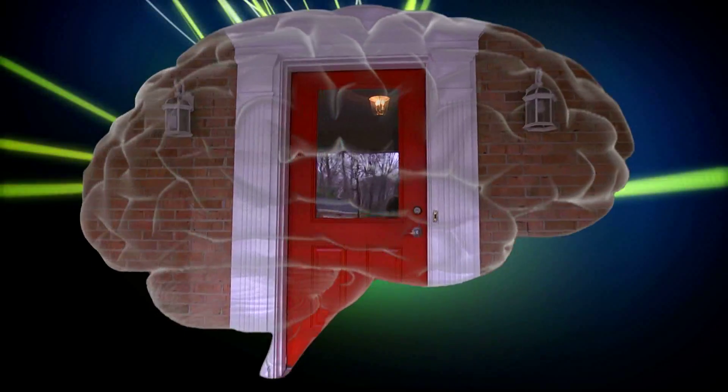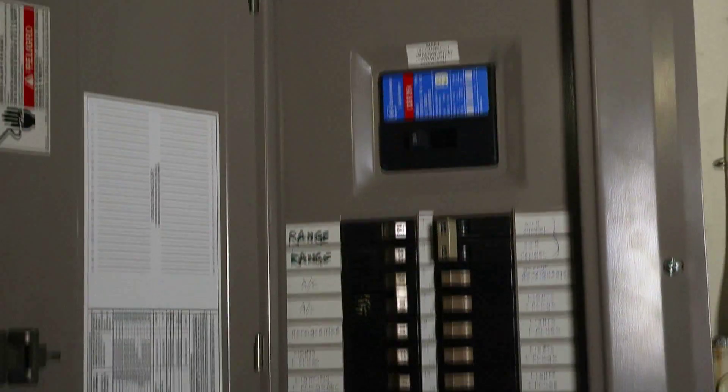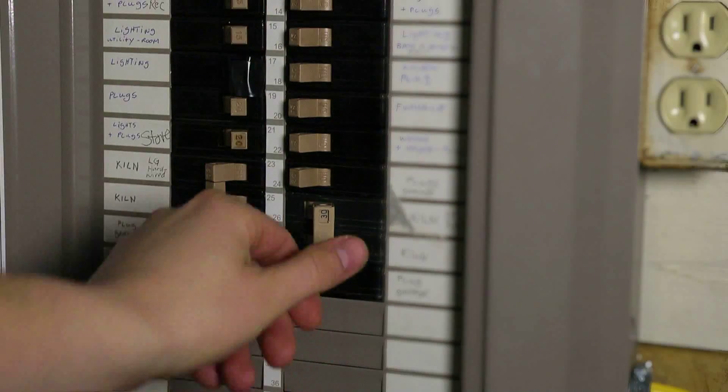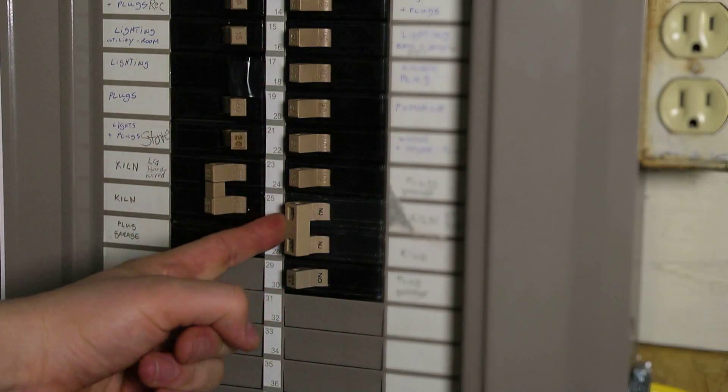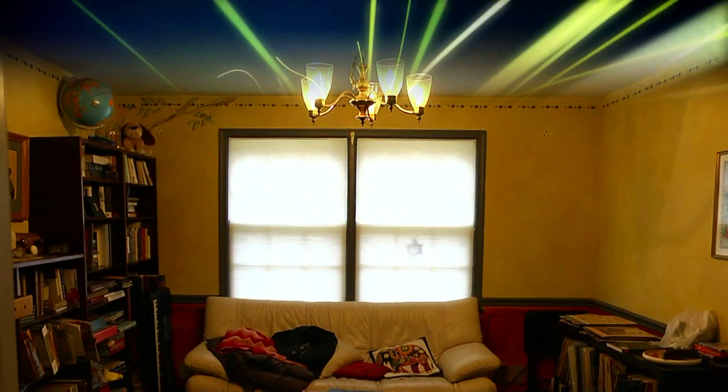Think of the brain like the electrical circuits in your home. To identify the function of each circuit or type of neuron, you could individually turn each circuit on and off to see which electrical outlets or behaviors they each control.